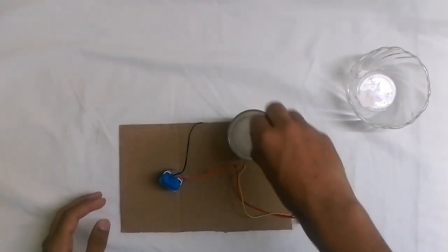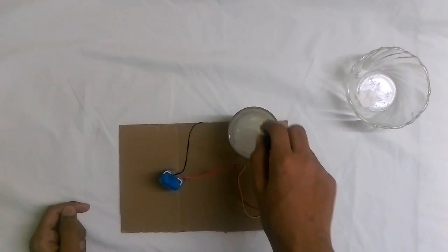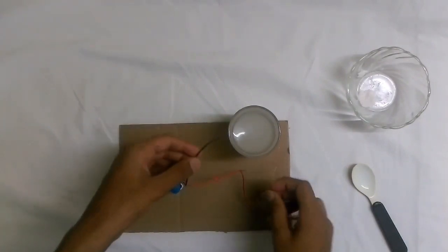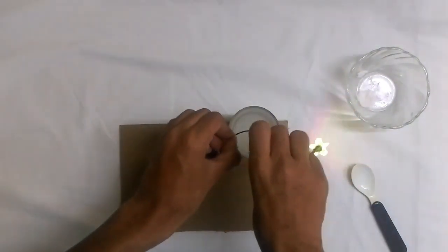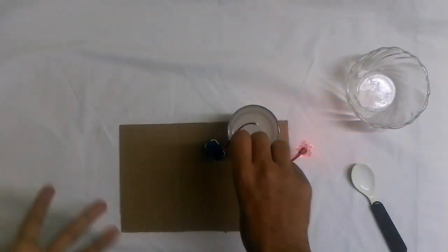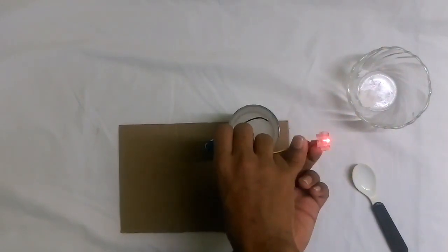You have to stir it well so that the salt dissolves in the water. Now if you keep these wires in here, you can see that the bulb is glowing much brighter and its electricity is up to its max level. It's glowing absolutely fine.